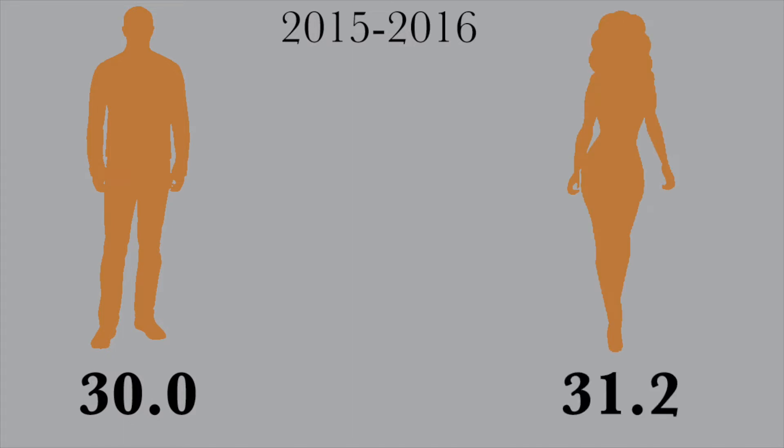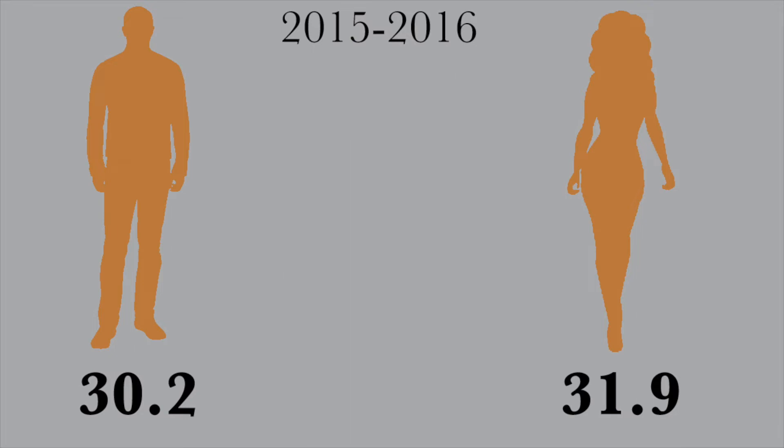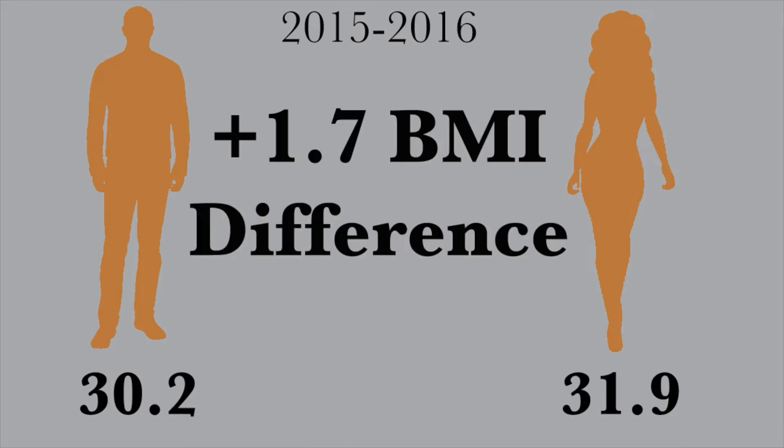For the Hispanic group, the average BMI for men is 30, while the average BMI for women is 31.2 — a difference of 1.2, with women averaging higher. For the Mexican American group, the average BMI for men is 30.2 and for women is 31.9, a difference of 1.7. At 31.9, the Mexican American female is tied with the non-Hispanic black female for the highest BMI of all groups.